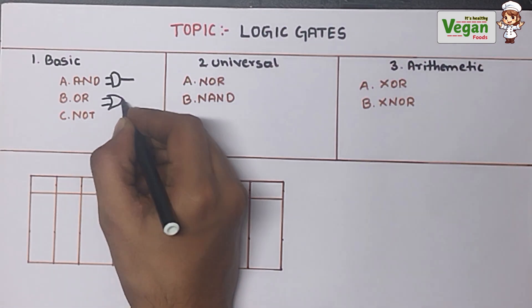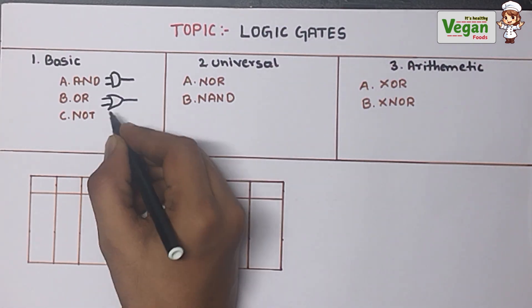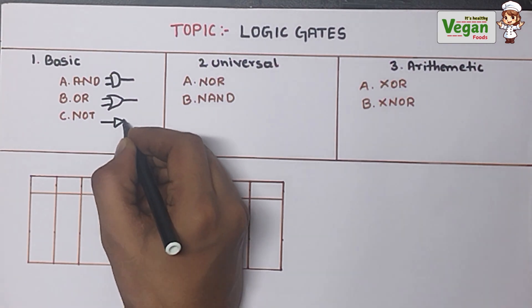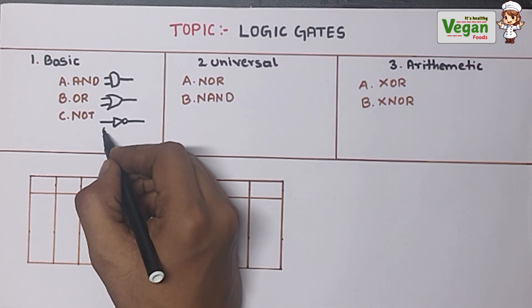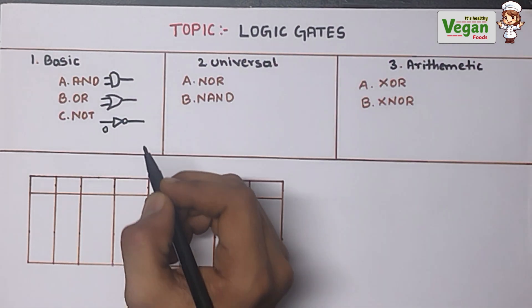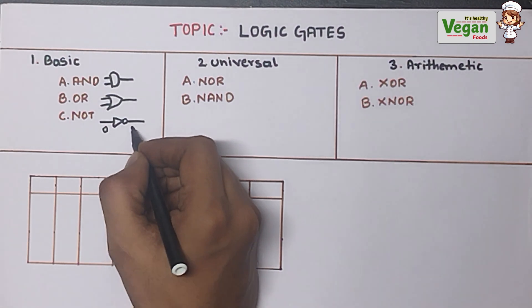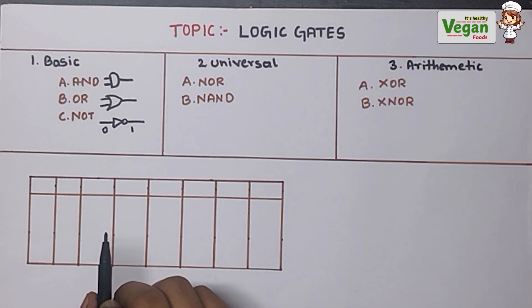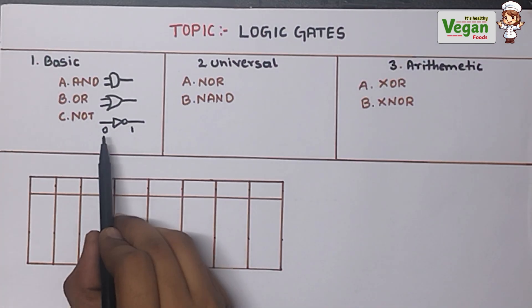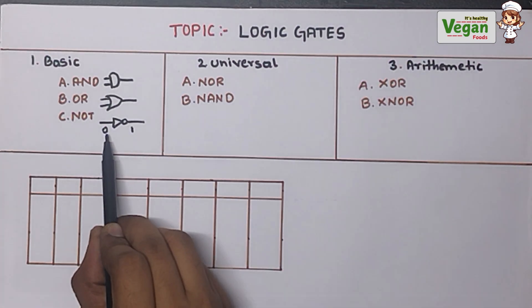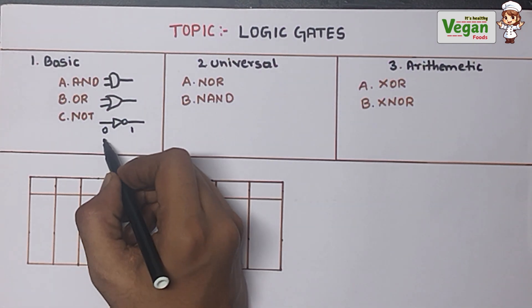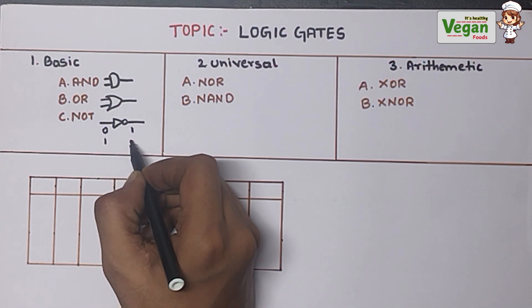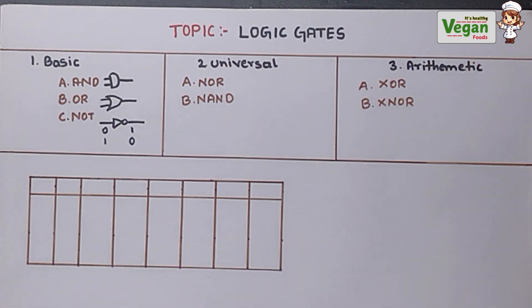Next is the OR gate. Then the NOT gate, which has a single input and single output. If you give 0 as the input, 1 will be the output. That is, if you give low as the input, the output will be high. If you give high as the input, the output will be low.